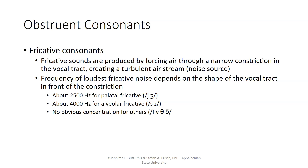Fricative sounds are produced by forcing air through a narrow constriction in the vocal tract, creating a turbulent airstream, which is an aperiodic noise source. The frequency of the loudest part of the fricative noise depends on the shape of the vocal tract in front of the constriction.